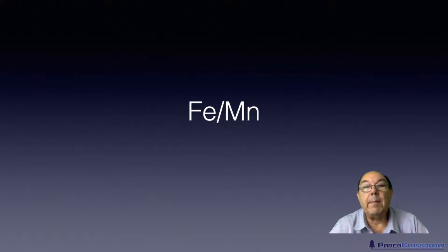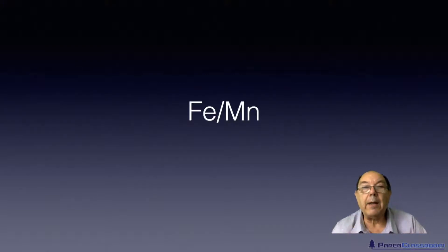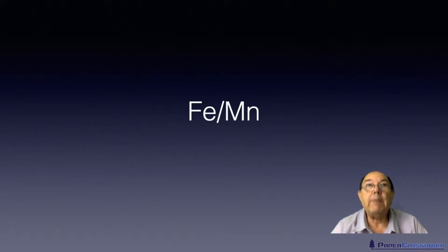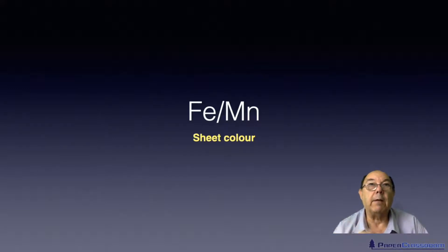Another problem, particularly if the water source passes through a mining area, is soluble iron salts and soluble manganese salts. These tend to be yellow, green, and brown, so they will affect the shade of your sheet.